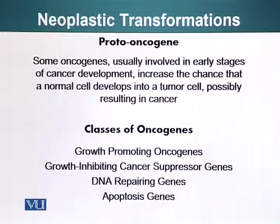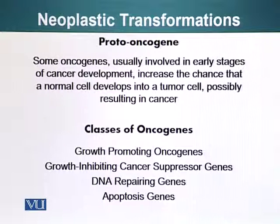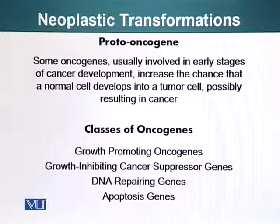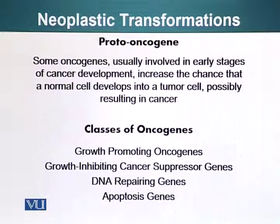We are going to talk about four classes of oncogenes or proto-oncogenes. First, growth-promoting oncogenes — genes whose products cause cells to grow, divide, or multiply. Second, growth-inhibiting cancer suppressor genes. Third, DNA repairing genes — genes that function in DNA repair, so if there is DNA damage and our DNA repairing genes are not able to perform their function, it can also result in cancer, and the changes that occur in DNA will be sustained. Fourth, apoptosis genes — genes which sense whether the cell is performing normally or not; if they see that cells are not performing normally, they cause cells to go through apoptosis, or cell suicide.